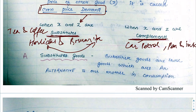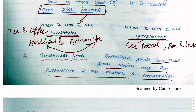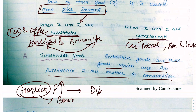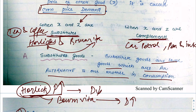In substitute goods, if Horlicks price increases, its demand decreases by the law of demand. Consumers then switch to Bournvita, so Bournvita's demand increases. What happens in substitute goods: an increase in the price of one good causes an increase in quantity demanded of the other good.